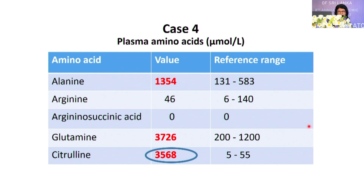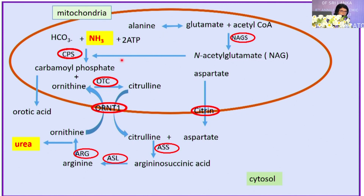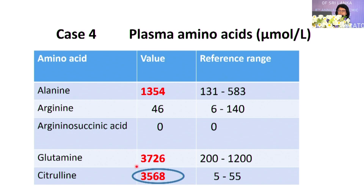Other tests showed high alanine, high glutamine, and high citrulline. This is the ammonia detoxification pathway — the urea cycle — where ammonia produced by protein metabolism undergoes enzymatic reactions to become urea, through three mitochondrial steps, three cytosolic steps, and two transport mechanisms. A defect in any of these can lead to high ammonia. This child with high citrulline had arginosuccinate synthase deficiency, which is why the child passed away.